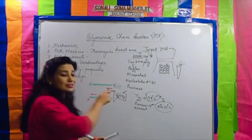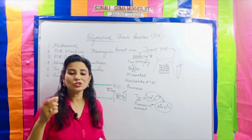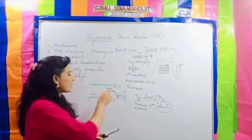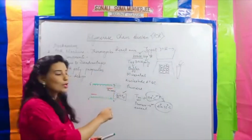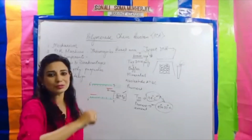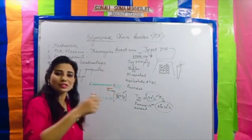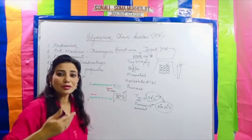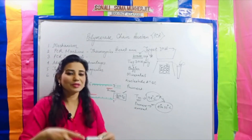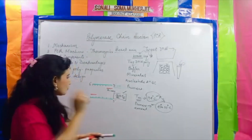An important consideration: if the primers have sequences that match with themselves — say 4 to 5 matching sequences — then what happens is that a primer will bind with another primer and become a dimer. A primer binds with another primer and becomes a dimer, forming a hairpin-like loop. This is a very important factor to avoid.